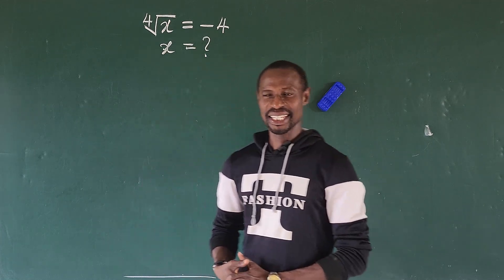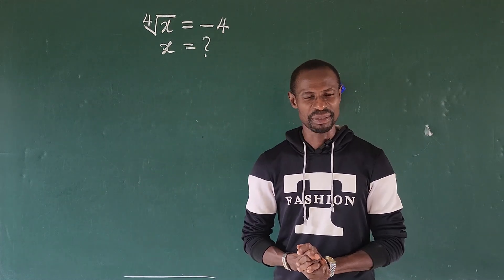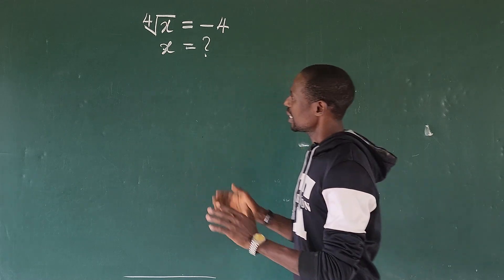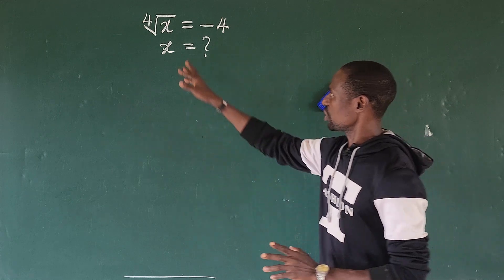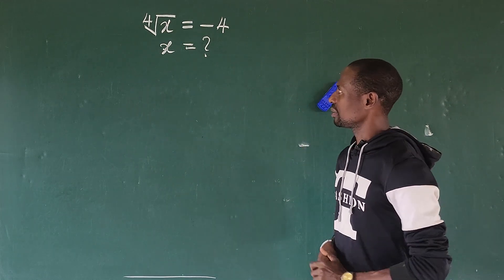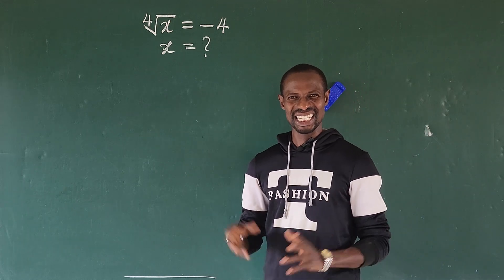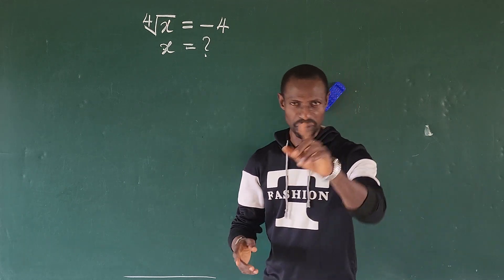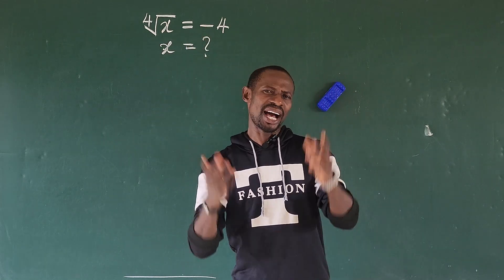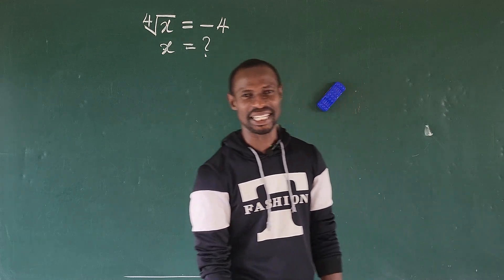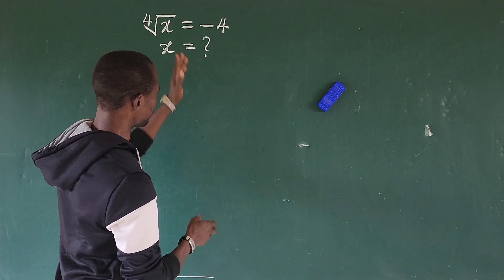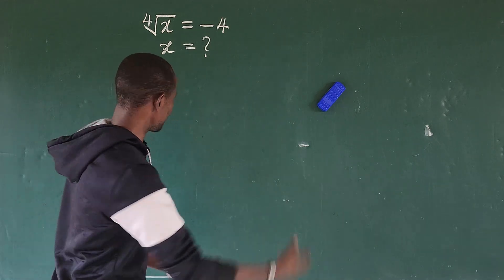Hello everyone, welcome to this class. We have this simple challenge before us. If you look at the question, it appears to be very easy, and many looking at this may say you just have to take the power of both sides — and if we do that, you're going to get 256 as the value of x. But if you plug 256 into this, it will not give you minus four. So how do we solve this math challenge?